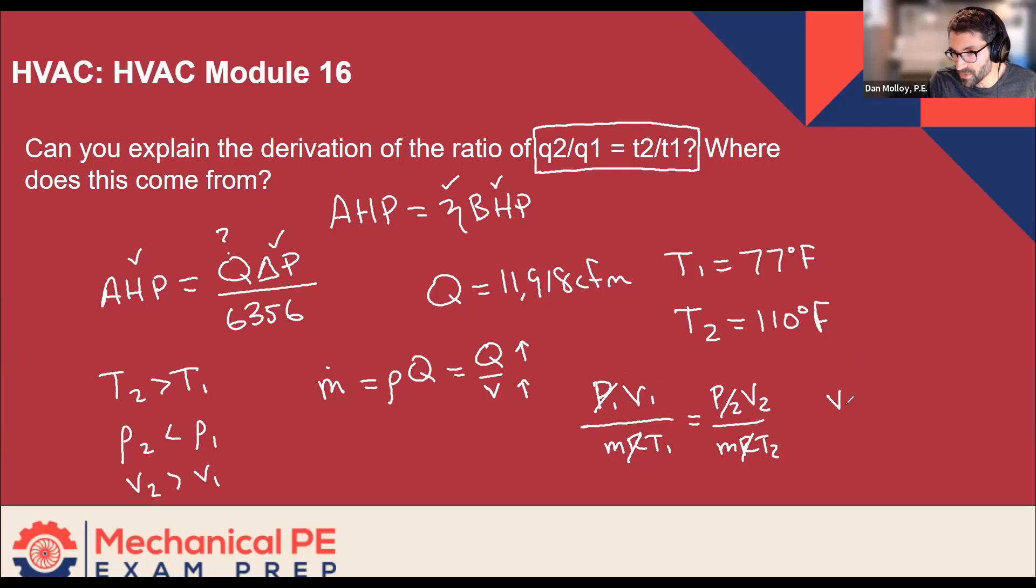So then this becomes little v specific volume over T one equals little v two over T two. And then we could rearrange that, multiply by T two on the left and divide by v one on the right. And now we have a direct relationship between temperature and specific volume. And now it's only a small leap from there to say that this could be a volume flow rate and it doesn't have to be specific volume. It could just be volume.